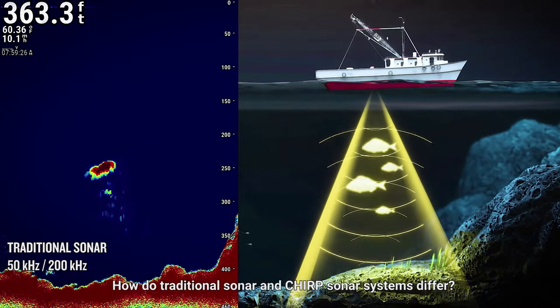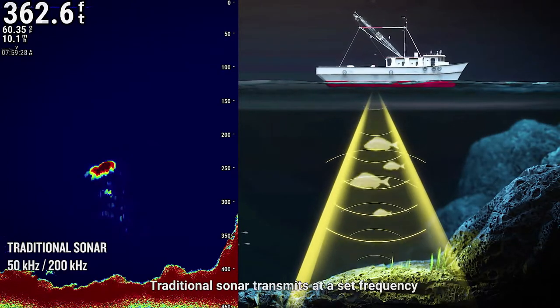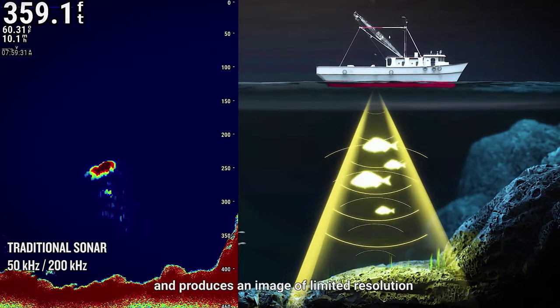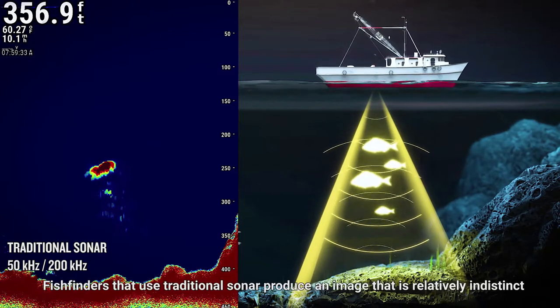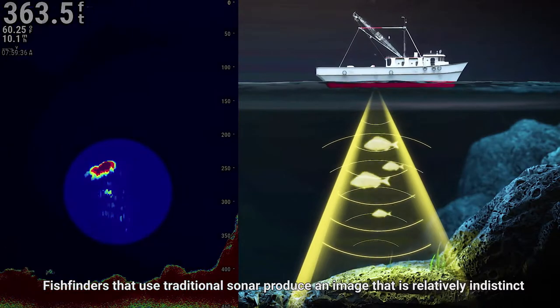How do traditional sonar and Chirp sonar systems differ? Traditional sonar transmits at a set frequency and produces an image of limited resolution when it strikes an underwater object. Fish finders that use traditional sonar produce an image that is relatively indistinct.